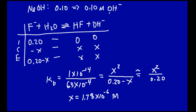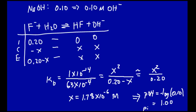X is less than 5% of 0.20, so we're okay. The strong base contributes 0.1 molar OH⁻ while the weak base reaction gives only 1.78 times 10 to the minus 6 molar OH⁻. So indeed the strong base dominates the pH. The pOH equals minus log of 0.10, which is 1.00, and the pH is therefore 13.00. There are the details of the problems we worked using shortcuts on Friday.